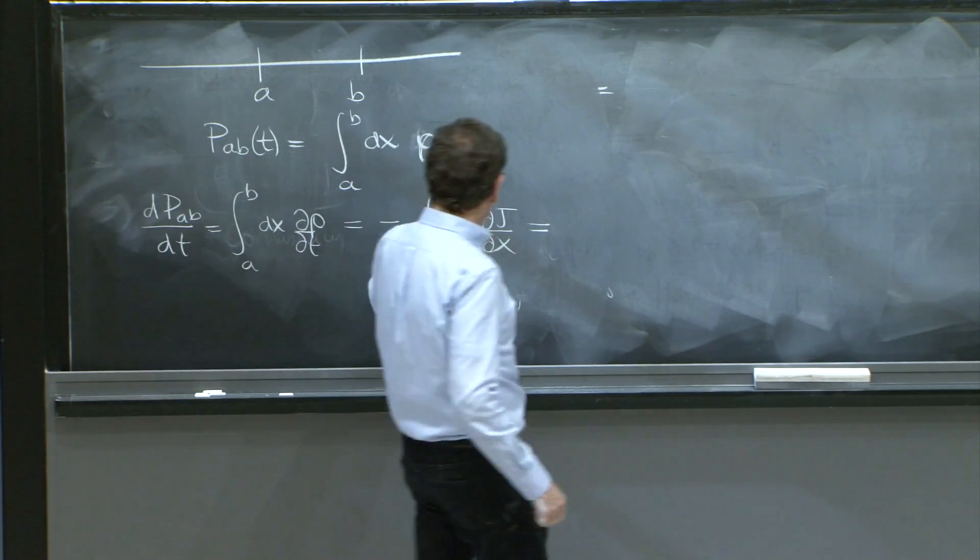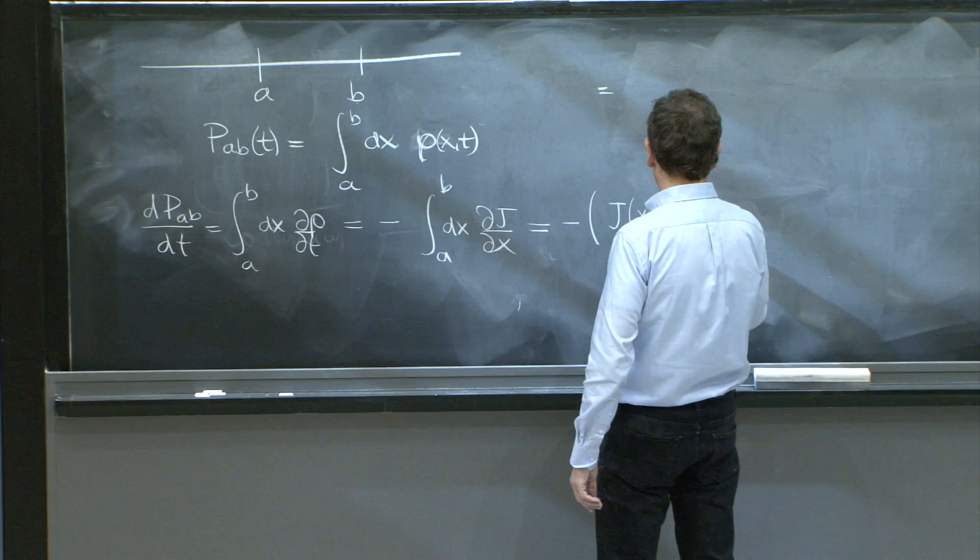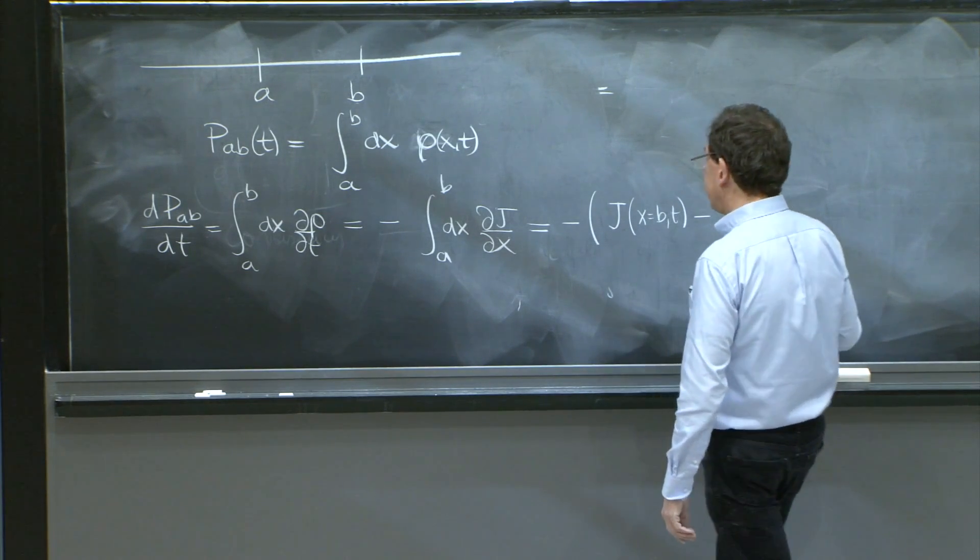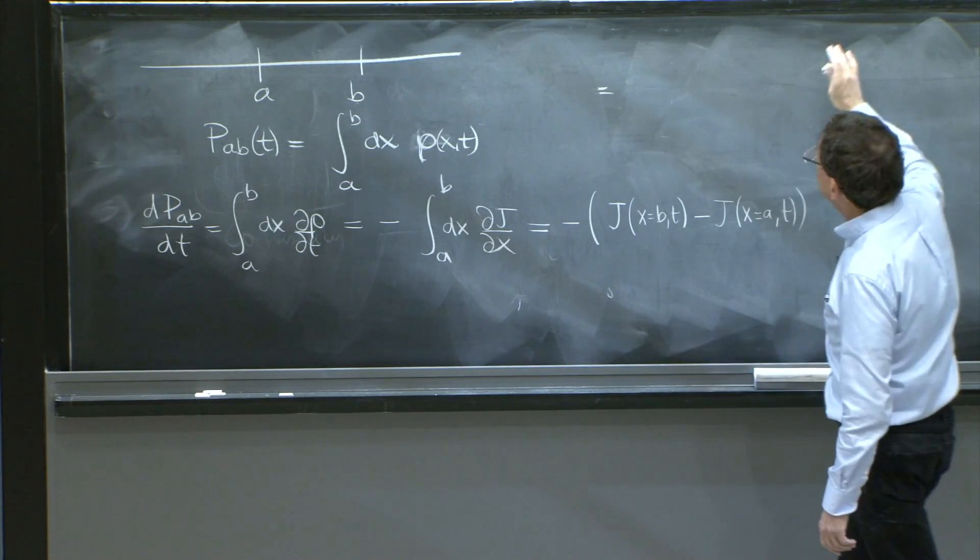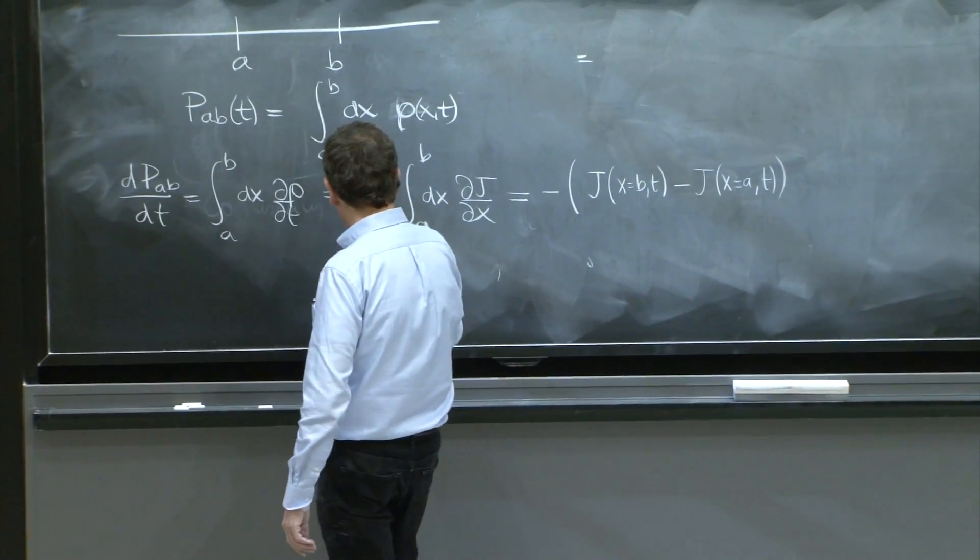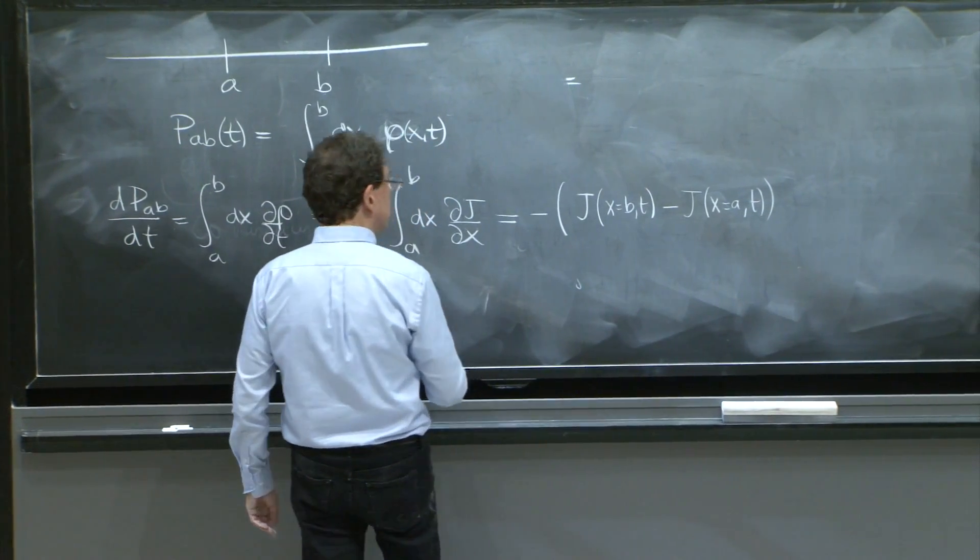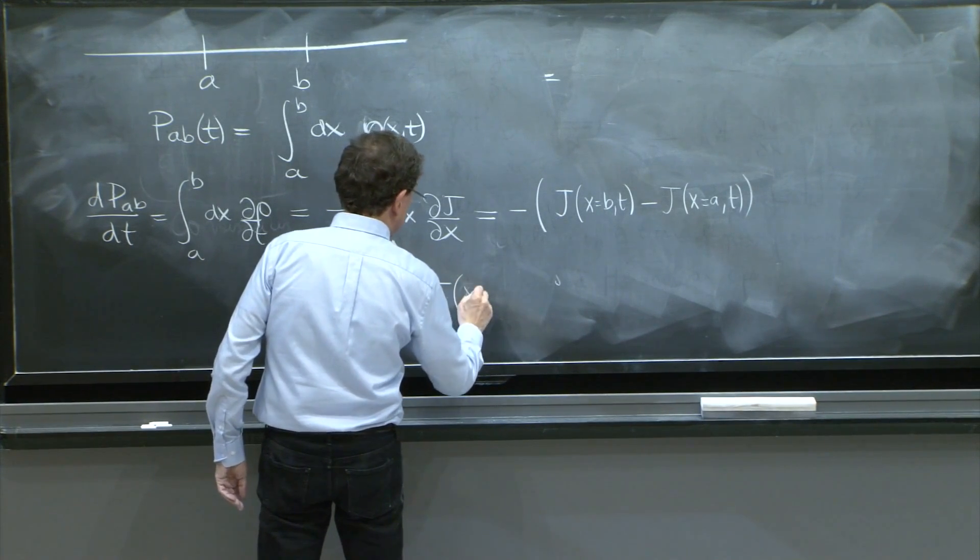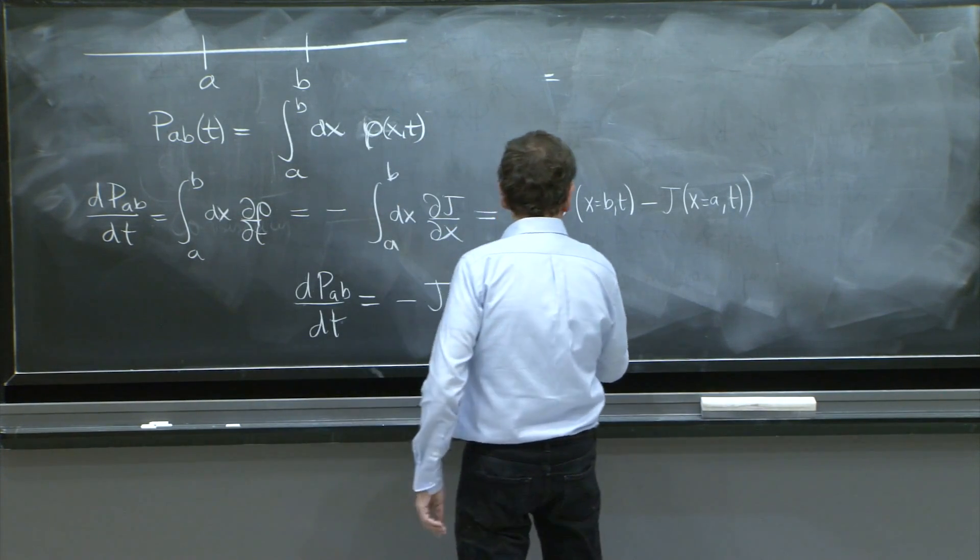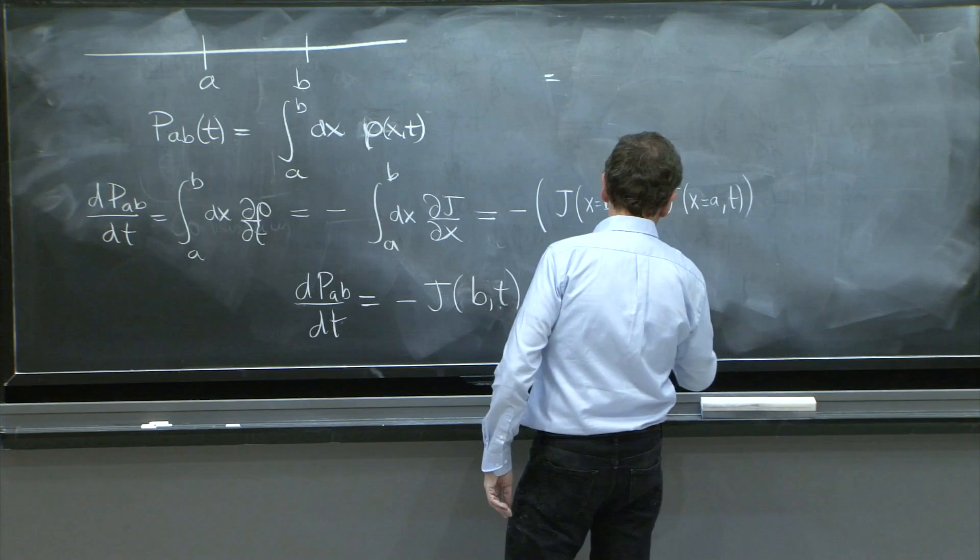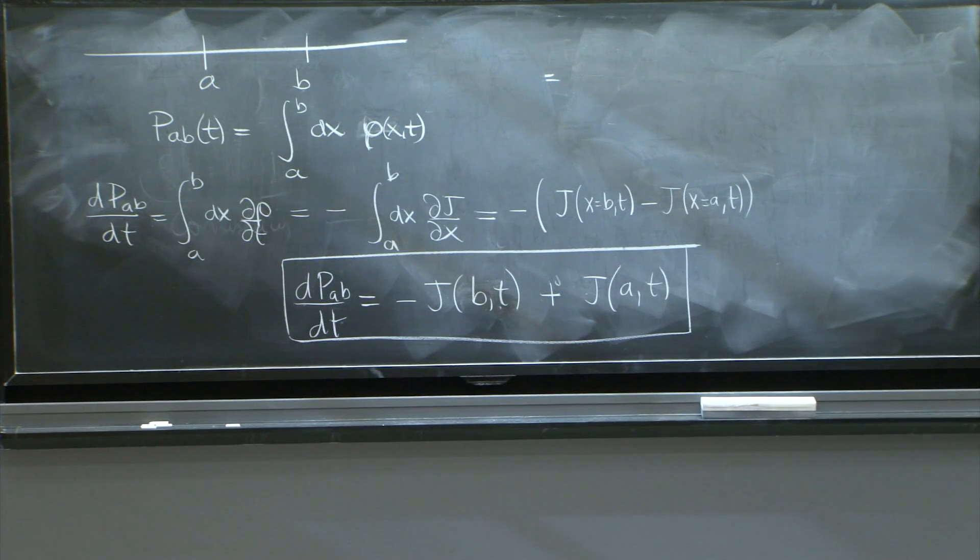And what is that? Well, you get the j at the boundary. So this is minus j at x equals b t minus j at x equals a t. So this is minus j at x equals b, or output just b t plus j of a t. So this is minus b. Let's see if that makes sense.